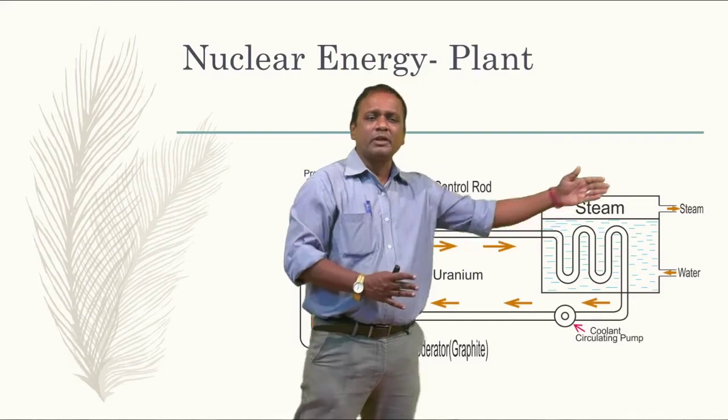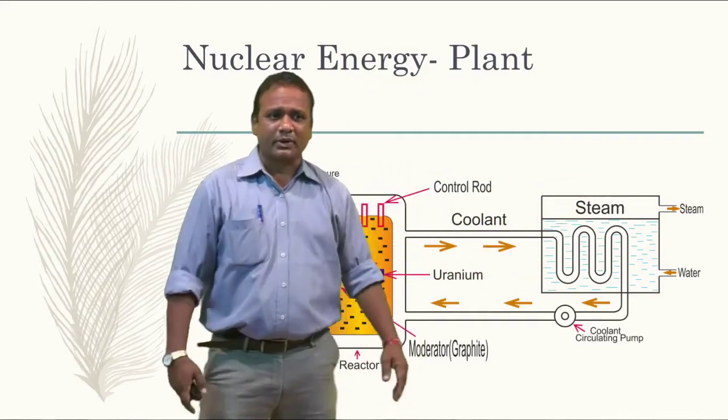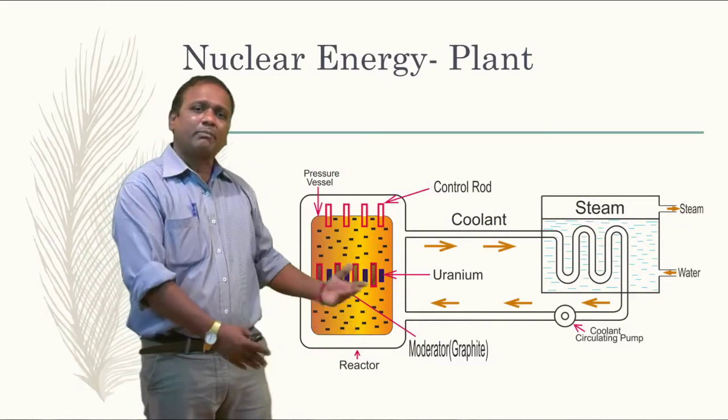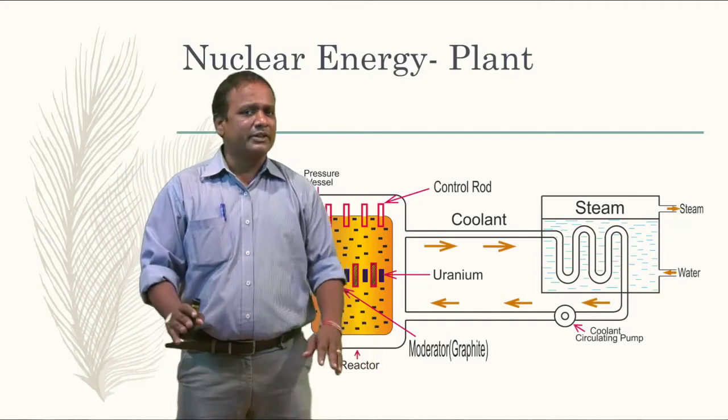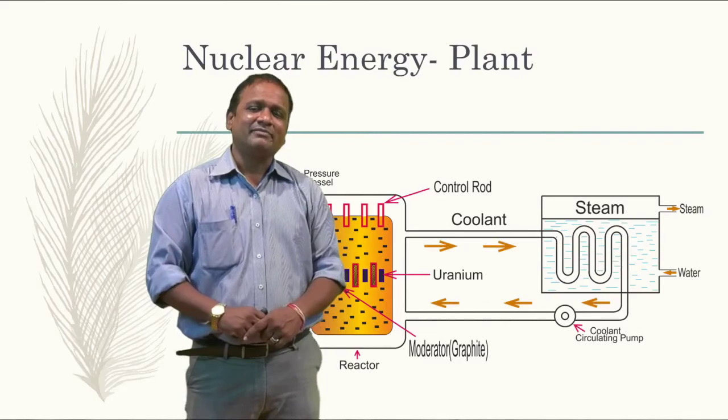The steam is used to flow over the turbine, and the turbine runs the generator, and electricity has been produced. This is how the nuclear plant and nuclear energy is used in the plant to produce electricity. Hope this would give you a basic understanding of the construction of the nuclear power plant. Thank you.